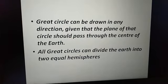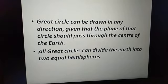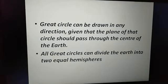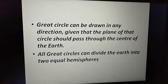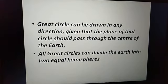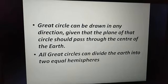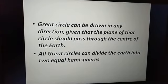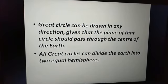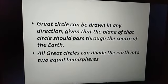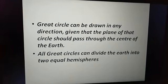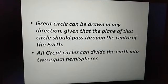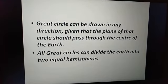A great circle can be drawn in any direction on the earth, as long as the plane passes through the center of the earth. Whatever circle we make, it must pass through the earth's center. All great circles divide the earth into two equal hemispheres — that is the unique property of a great circle.